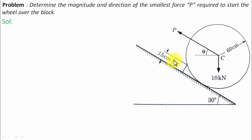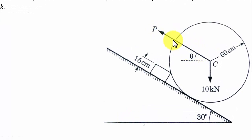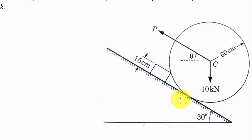First, let us understand this arrangement. There is a wheel and a block whose height is 15 centimeters. We need to find the minimum force P applied at an angle theta, just good enough to start the wheel over the block. When that happens, the point of contact that the wheel has with the inclined surface breaks, meaning the surface offers no normal reaction to the wheel.